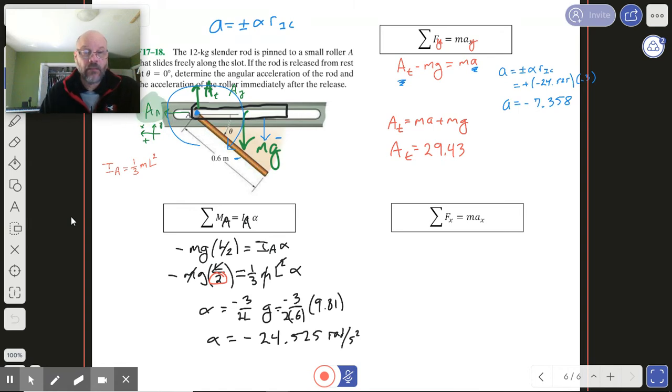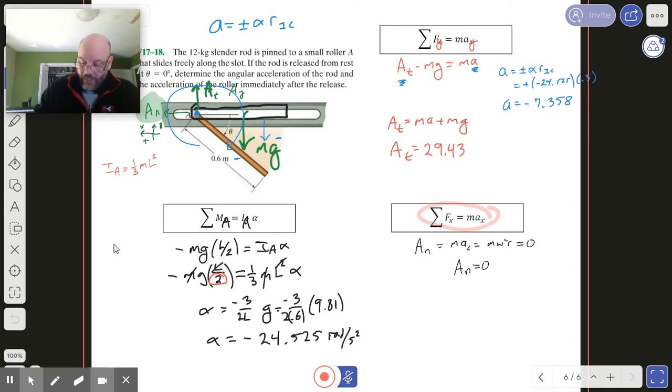Now what do we do with trying to find A sub n? Well, let's take a look. We'll use this equation down here. I've got A sub n here, and that's got to equal m a centripetal. We'd have one of those m omega squared r things going on, but the very moment at which it's released, it's not rotating at all. That means this side over here is zero. Therefore, A sub n is zero. There's no horizontal component to it.